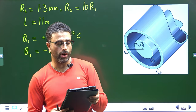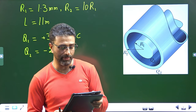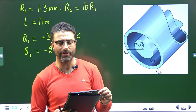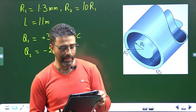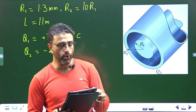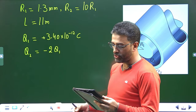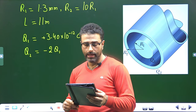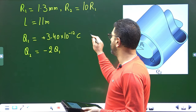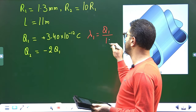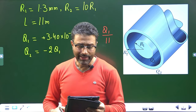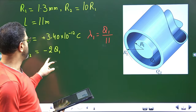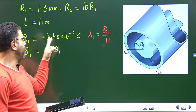The net charge of the rod is q1, which is plus 3.40×10⁻¹² coulombs — this is the total charge of the rod. So charge per unit length lambda1 equals q1 divided by 11 meters. The charge on the shell is q2 equal to minus twice q1 — double the magnitude but negative sign.